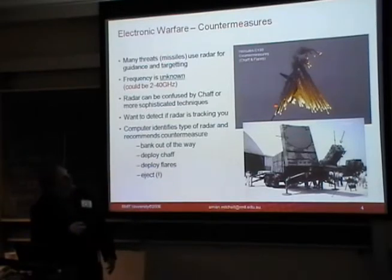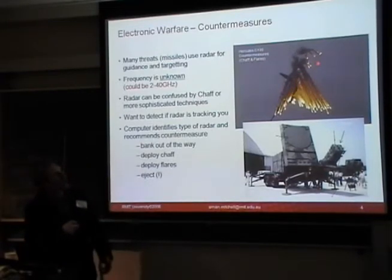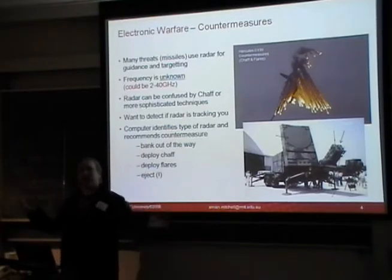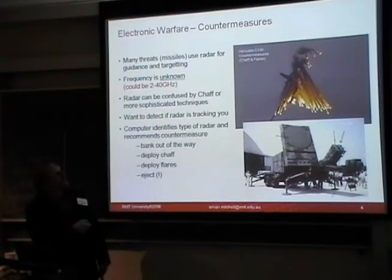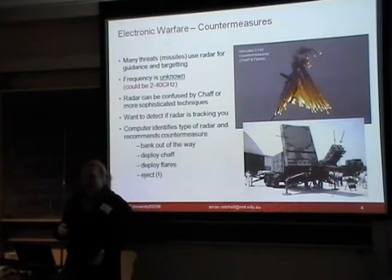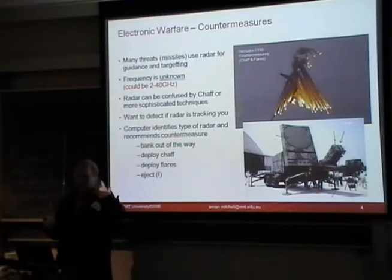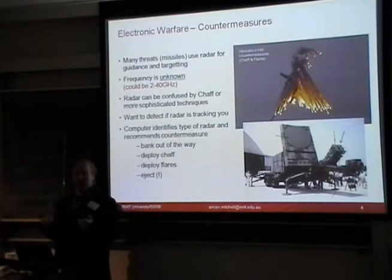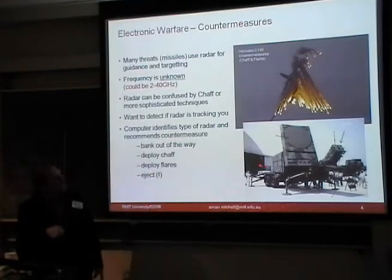Common countermeasures include deployment of flares, which are very effective against infrared-guided missiles — heat-seekers. There's also chaff, which is essentially cut-up little bits of tinfoil. You deploy lots of metal into the air and suddenly you go from being an object this big to a huge cloud of metal, which confuses radar. There are also more complicated countermeasures: banking out of the way, ejecting. There are also automatic countermeasures — if you've got about two seconds before impact, it will automatically eject you. And there are counter-countermeasures as well.